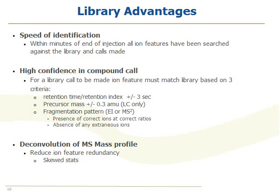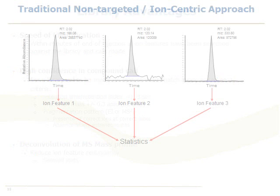Once the identification is made, we have a highly confident identification. The bottom half of these advantages relates to data processing — what having a library does is it allows us to deconvolute the MS mass profile in the LC. Let me show you a specific example.